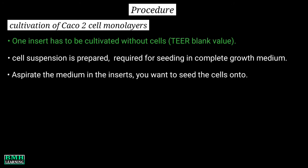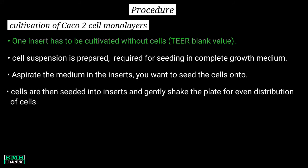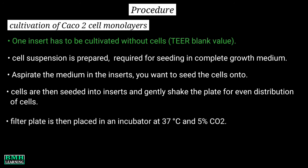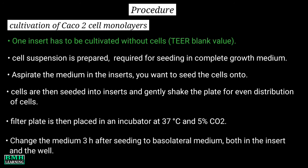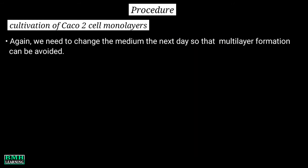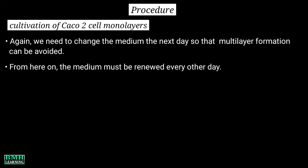Aspirate the medium in the inserts on which you want to seed the cells. The cells are then seeded into the inserts and the plate is gently shaken for even distribution of cells. The filter plate is then placed in an incubator at 37°C and 5% CO2. Change the medium 3 hours after seeding to basolateral medium, both in the insert and the well. Change the medium again the next day to avoid multi-layer formation. From here on, the medium must be renewed every other day, three times per week, until the end of the cultivation period, which is around 19 to 21 days.